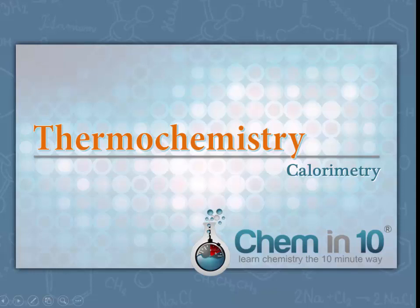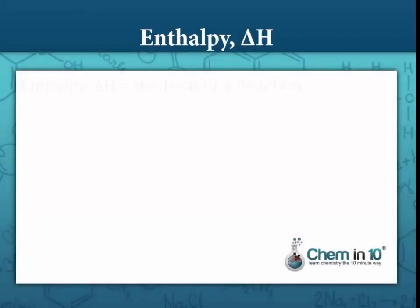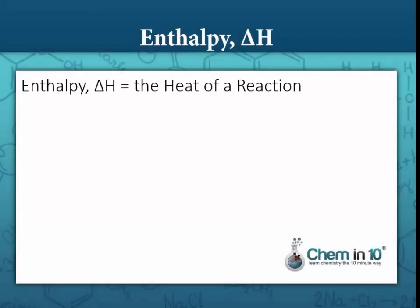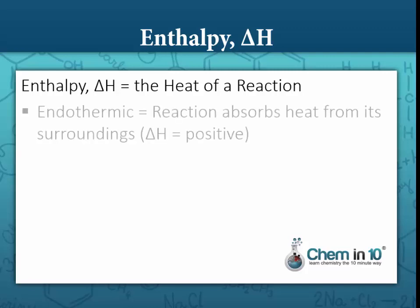There are various ways to calculate the enthalpy of a reaction or the enthalpy of a phase change. We're going to look at calorimetry as one way of determining the enthalpy. Recall that enthalpy is delta H — it's the heat of something, and the enthalpy of a reaction would be the heat of the reaction.